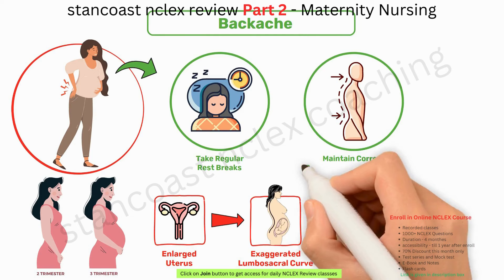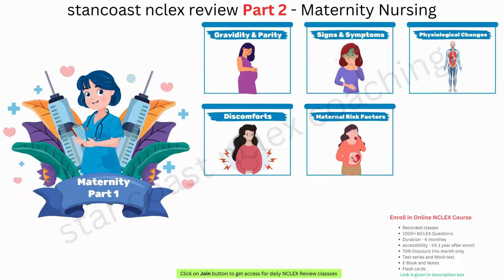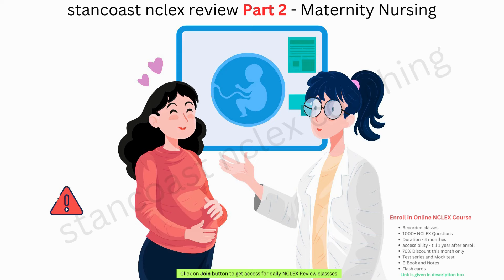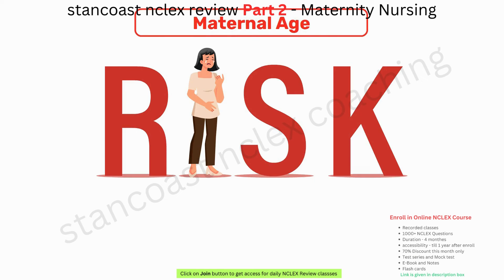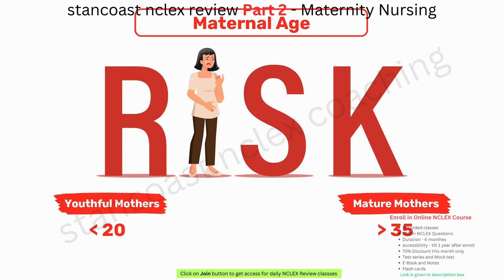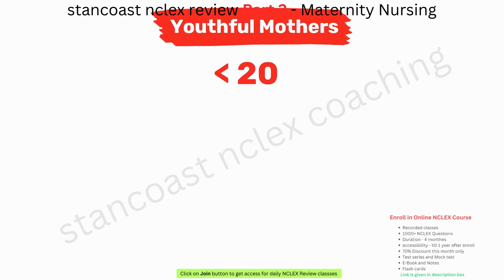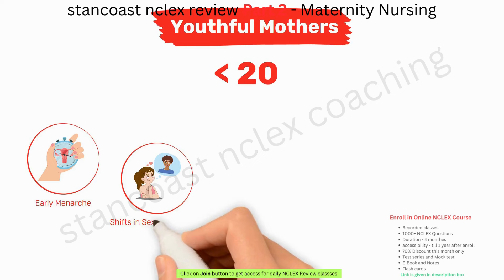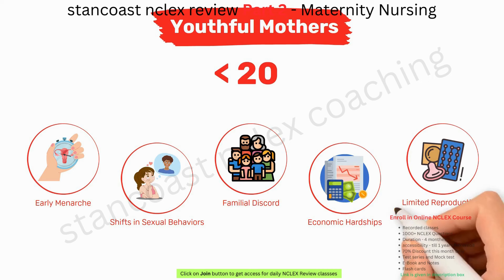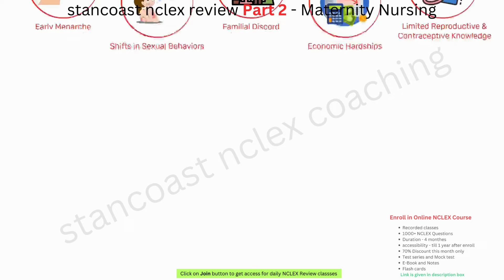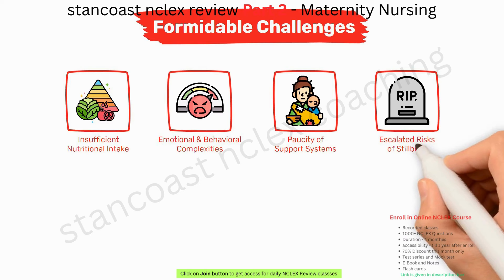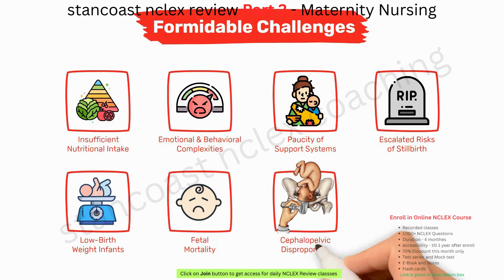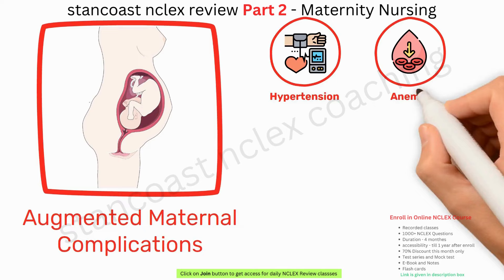In our comprehensive exploration of maternal risk factors, maternal age wields a substantial impact on perinatal outcomes. Elevated risks are associated with both youthful mothers under 20 and more mature mothers over 35. Adolescent pregnancy is contributed to by early menarche, shifts in sexual behaviors, familial discord, economic hardships, and limited reproductive and contraceptive knowledge. Adolescent pregnancies bring challenges including insufficient nutritional intake, emotional and behavioral complexities, paucity of support systems, escalated risks of stillbirth, low birth weight infants, fetal mortality, cephalopelvic disproportion, and augmented maternal complications such as hypertension, anemia, prolonged labor, and infections.